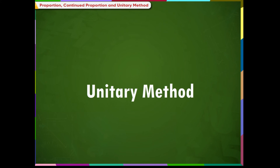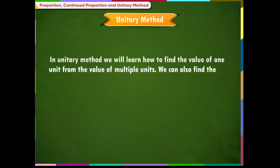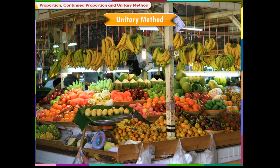Unitary Method: In the unitary method, we learn how to find the value of one unit from the value of multiple units, and also how to find the value of multiple units from the value of one unit. When we go to the market to buy an article, we ask the shopkeeper for the price of one article — this is called the unit price. We calculate the price of the number of articles we want to buy using this unit price.